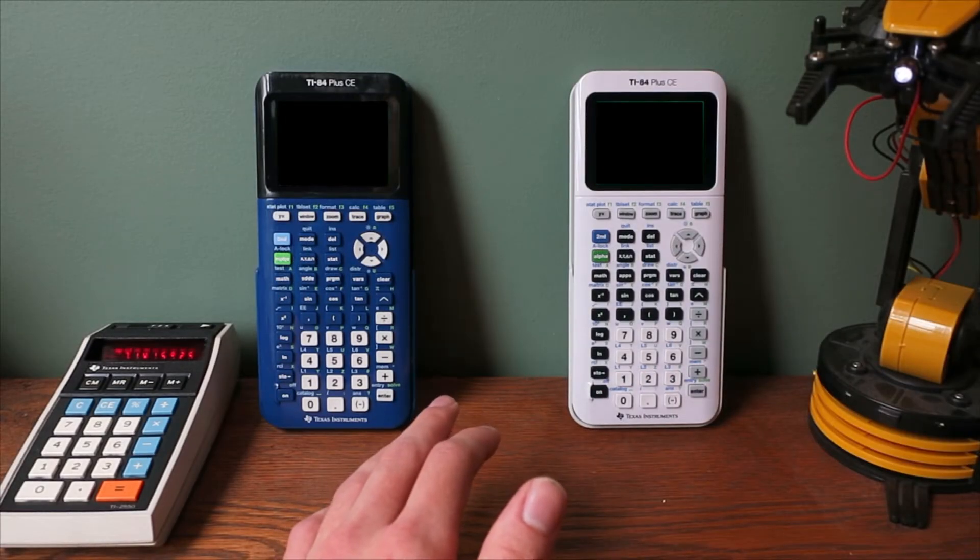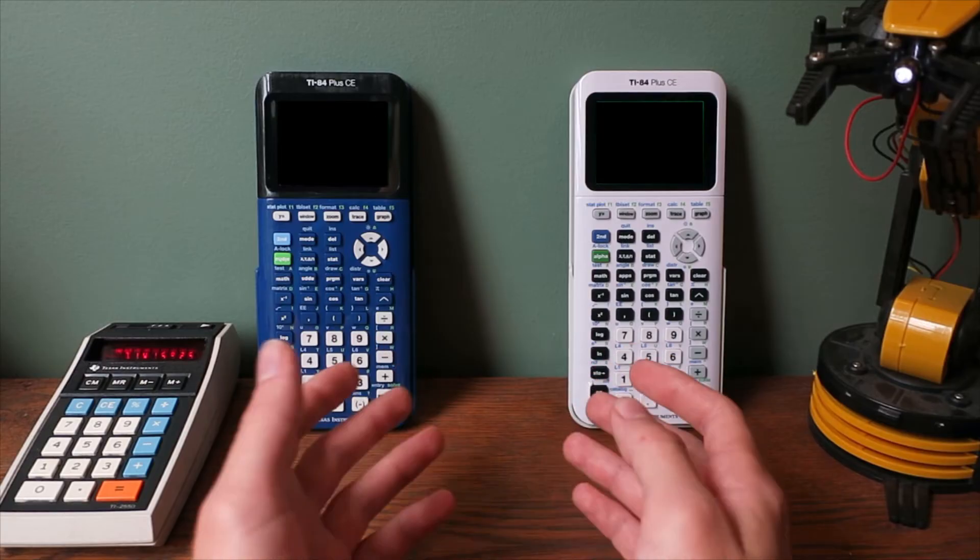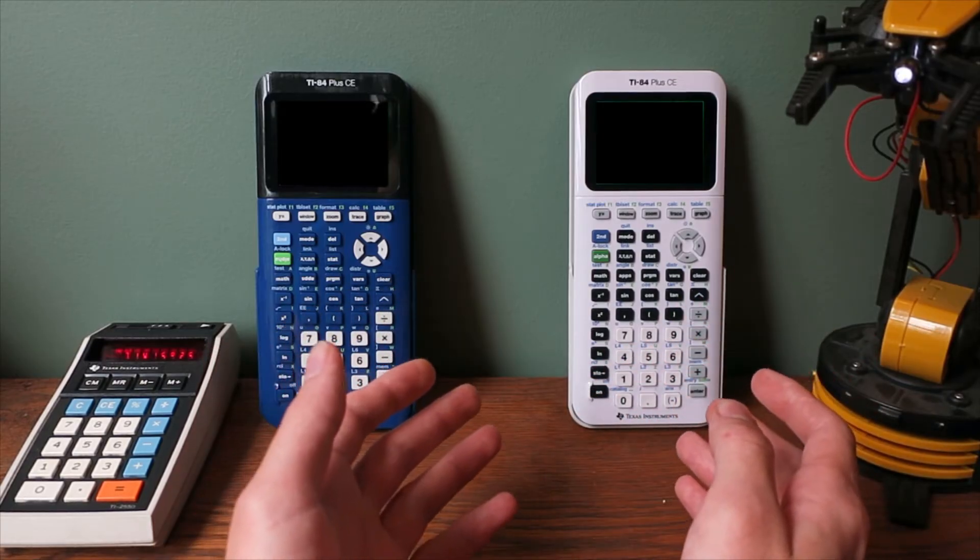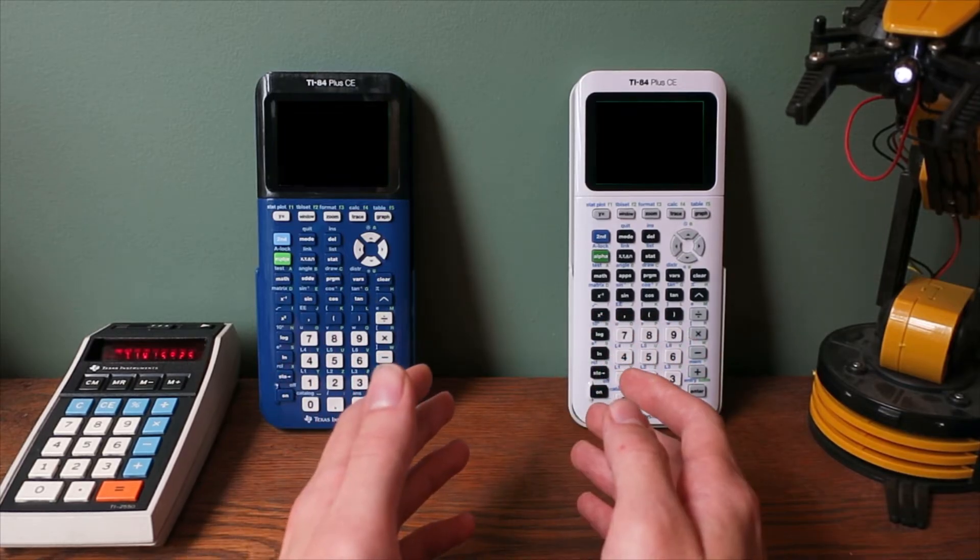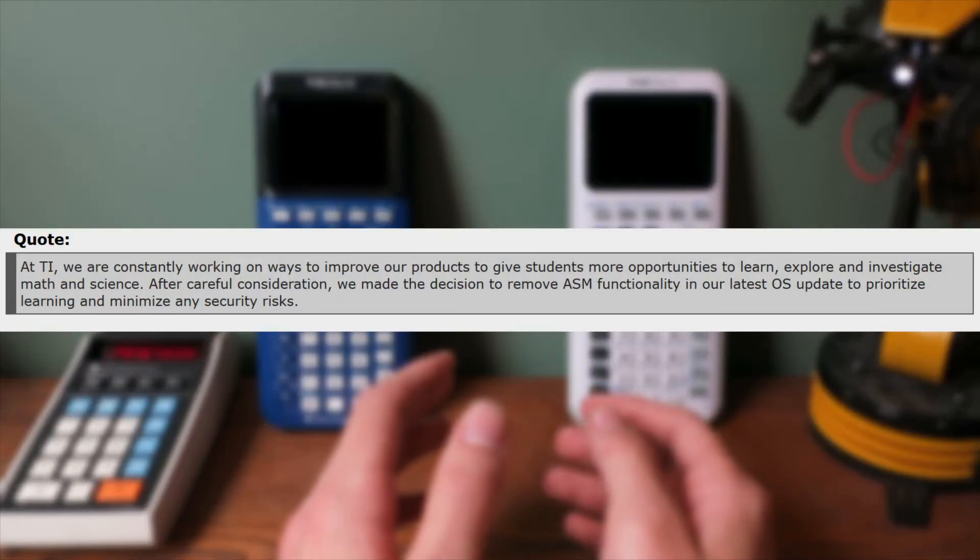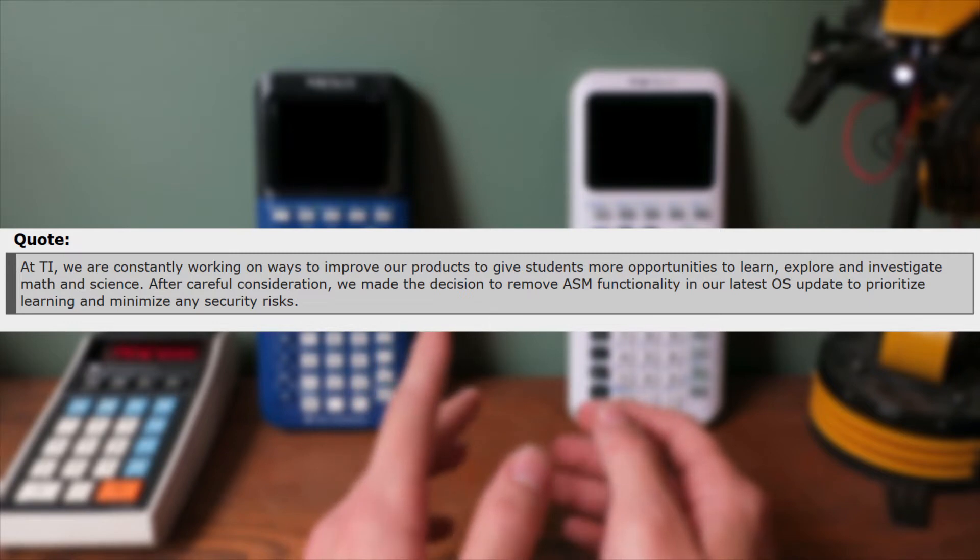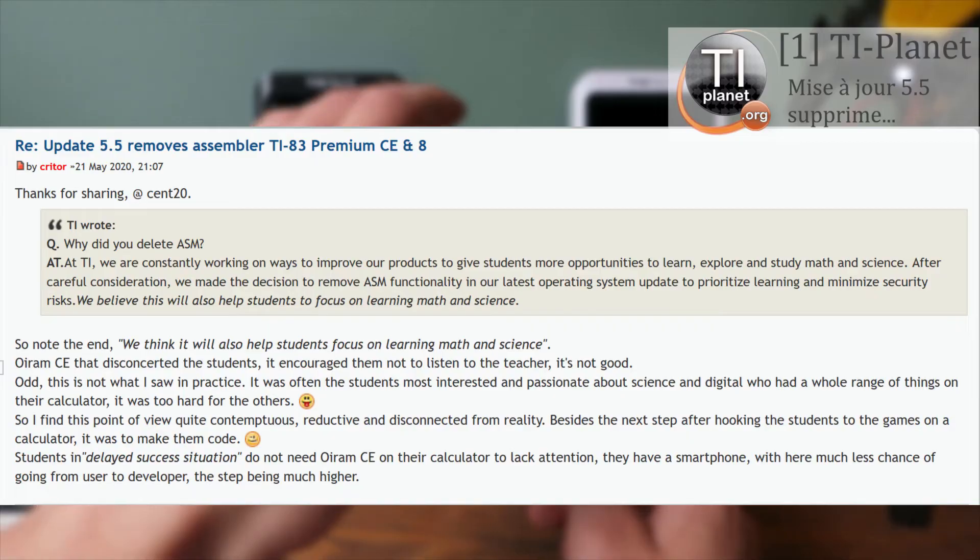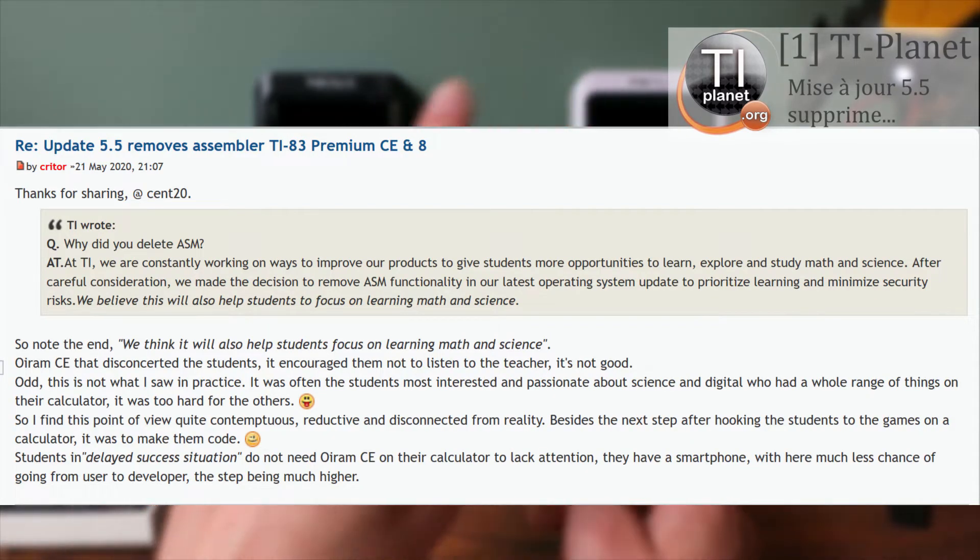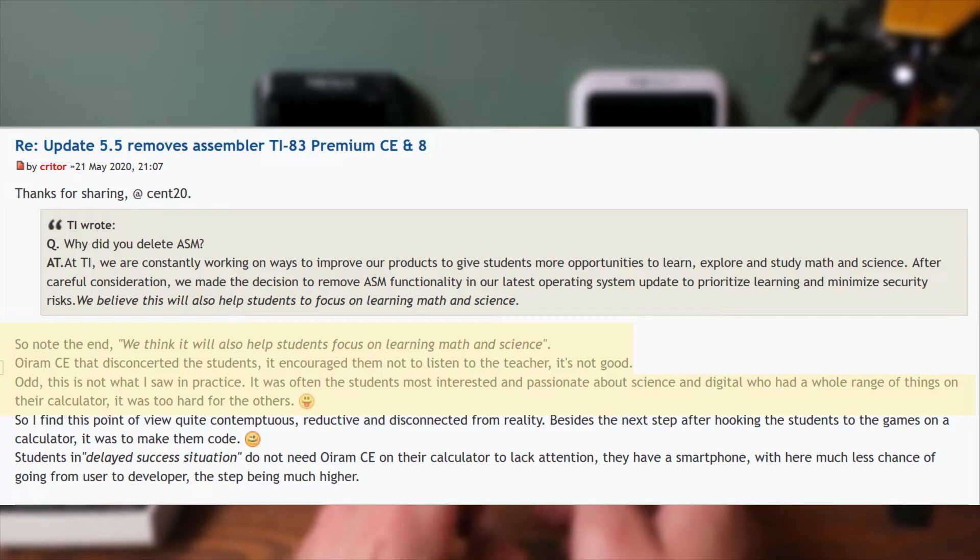Over the next few days, the community sent numerous pleas to TI to explain themselves, compromise with the community, or reverse their decision. The community even brainstormed several alternatives that would keep both TI and the community happy. However, TI's official response so far is, at TI we are constantly working on ways to improve our products and give students more opportunities to learn, explore, and investigate math and science. After careful consideration, we made the decision to remove ASM functionality in our latest OS update to prioritize learning and minimize security risks. As I just explained, TI actually maximized security risks and the general community consensus agrees that TI is not prioritizing fun learning, only standard boring learning students have grown to dread.